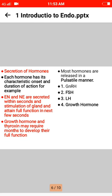Each hormone has its own characteristic onset and duration of action. For example, epinephrine and norepinephrine are secreted within seconds of stimulation of the glands and attain full function within the next few seconds. Growth hormone and thyroxine may require months to develop their full function. Most hormones are released in a pulsatile manner, such as GnRH, FSH, LH, and growth hormone.